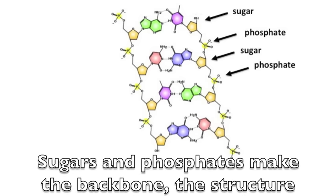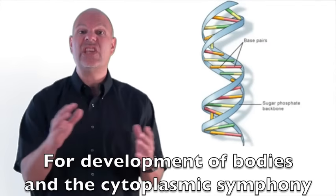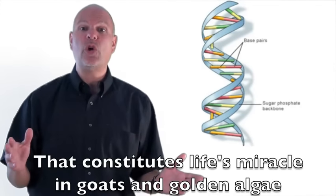Sugars and phosphates make the backbone the structure, but the sequence of bases is where you find instructions for development of bodies in the cytoplasmic symphony that constitutes life miracle on goats and golden algae.